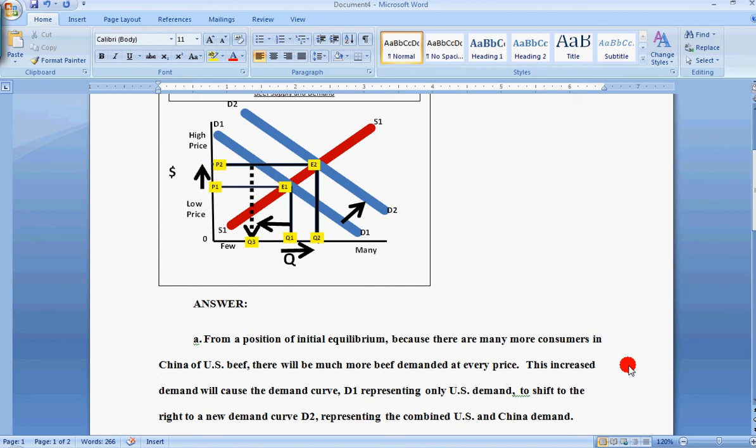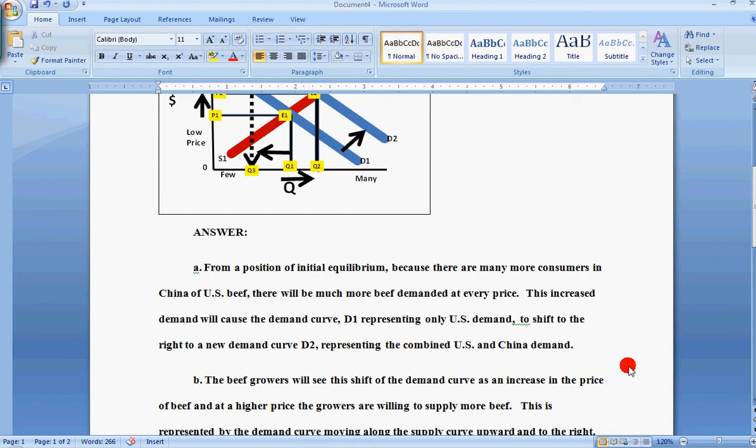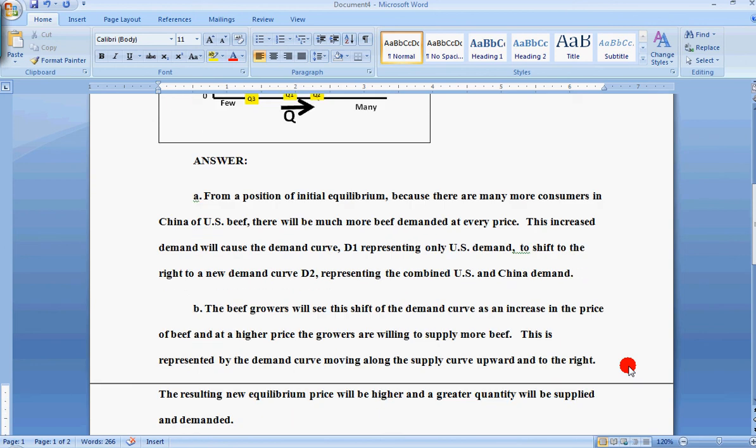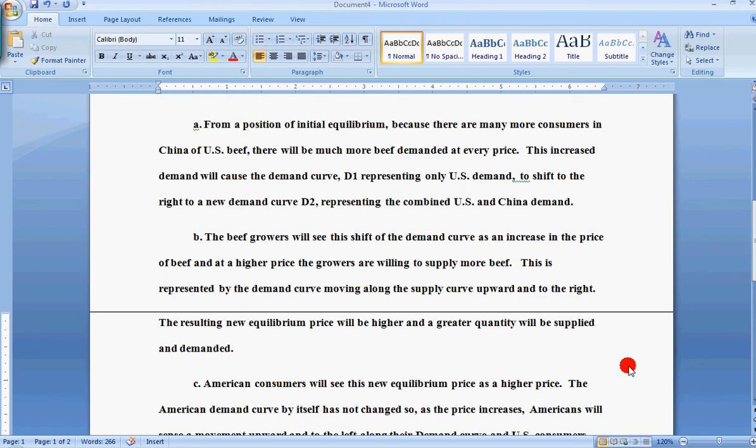It says from the position of initial equilibrium, because there are many more consumers in China of U.S. beef, there will be much more beef demanded at every price. This increased demand will cause demand curve D1, representing only U.S. demand, to shift to the right to a new demand curve D2, representing the combined U.S. and China demand. For part B, the beef growers will see this shift of the demand curve as an increase in price of beef and at the higher price the growers are willing to supply more beef. This is represented by the demand curve moving along the supply curve upward and to the right, resulting in a new equilibrium price that will be higher and a greater quantity demanded.